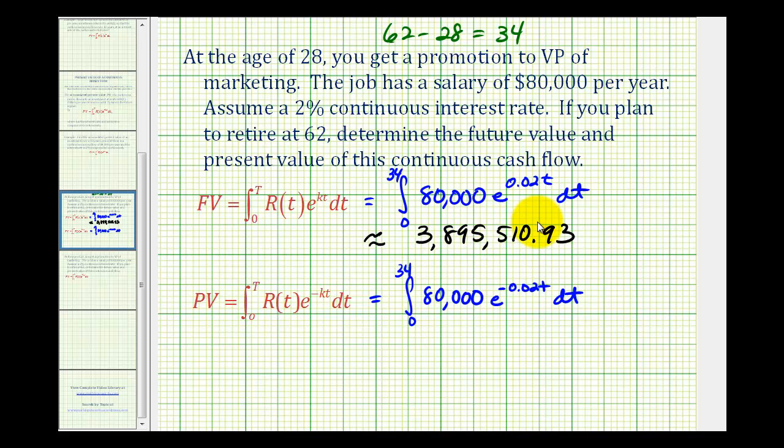So what this amount represents is, if we were to take all the money that we earned from age 28 to 62 and put it into an investment account that earned 2% continuous interest, at our retirement age, we would have this amount of money. Of course, we wouldn't be able to save all this money because we have to live, but this is what this number represents.